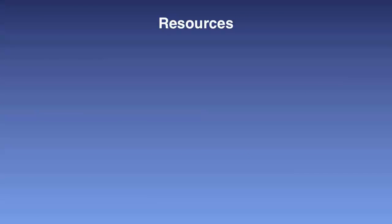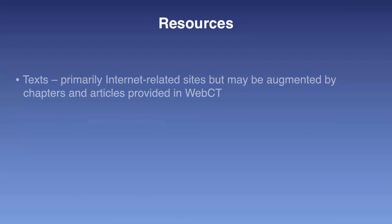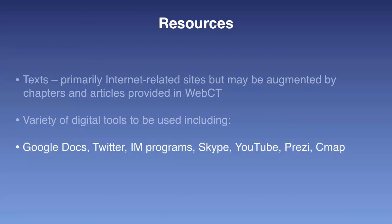The resources used in this course are internet-based and available using an internet connection. Some may only be accessed through the UOIT library due to licensing agreements; others are freely accessible through services like YouTube, Twitter, or CMAP. Text-based materials and websites are used for information gathering and filtering. Resources such as Twitter, WebCT discussion forums, instant messaging programs, Skype, and Adobe Connect can be used for communication between students, between students and the TA, and between students, the TA, and the instructor — as well as for knowledge building, which we'll discuss more in the next series of clips.